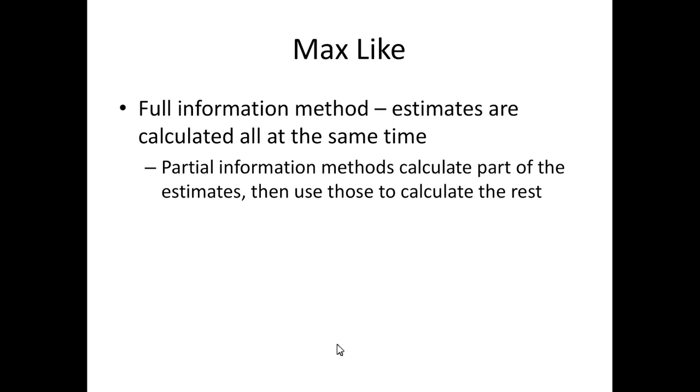It's often called a full information method, which means that all of the estimates, so all the parameters, the variances, the means, the intercepts, anything you're calculating is all calculated at the same time. Partial information methods calculate part of the estimates and then calculate the rest. But maximum likelihood works by calculating everything at once, a full information method.